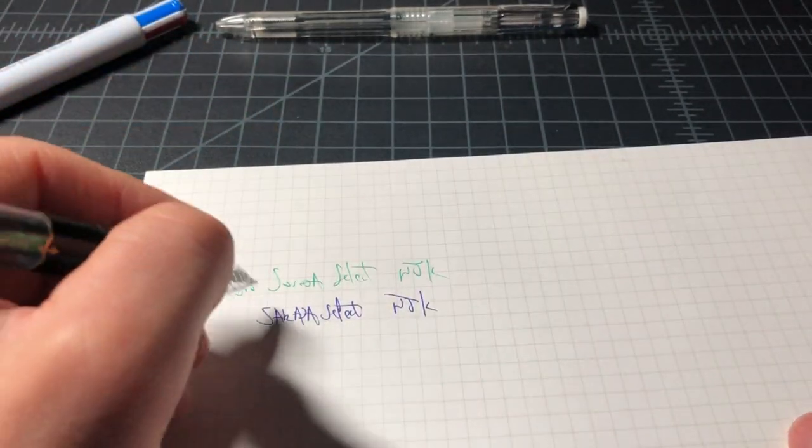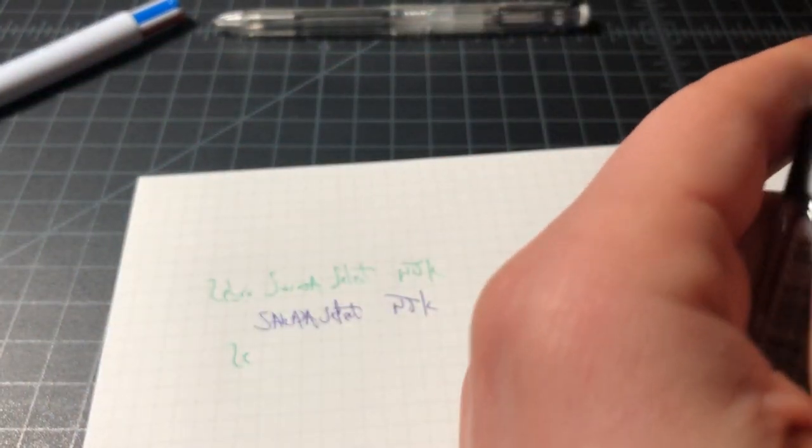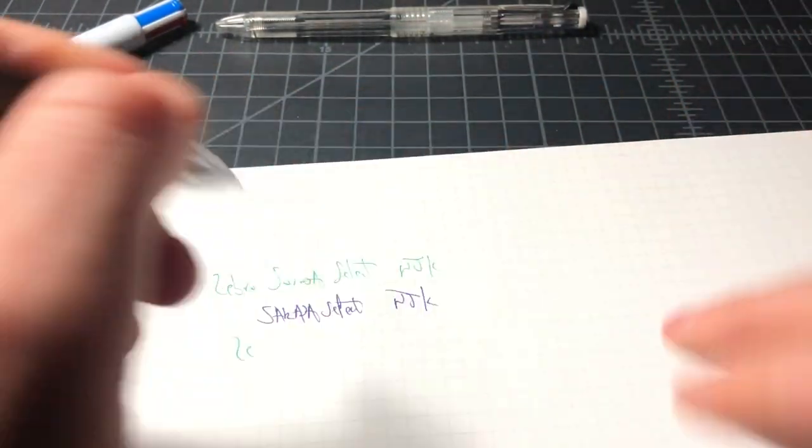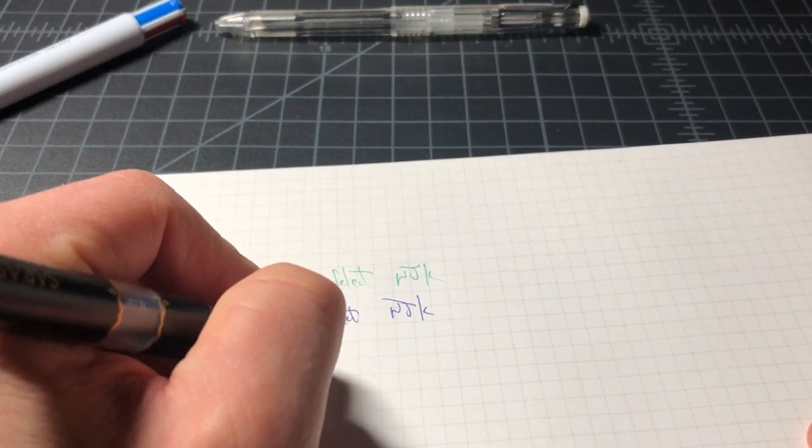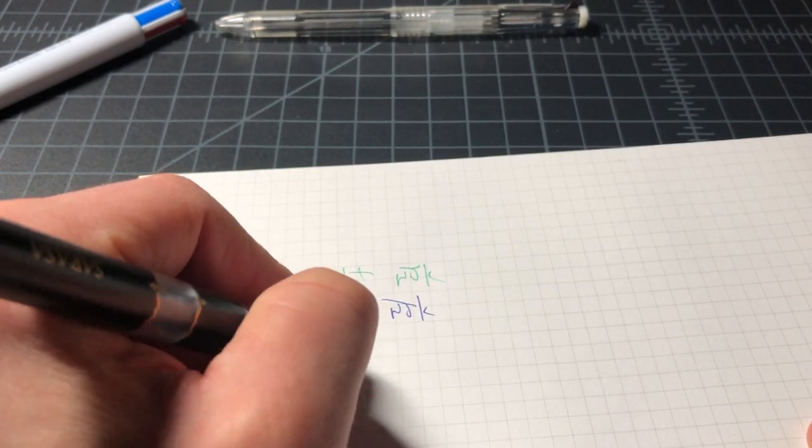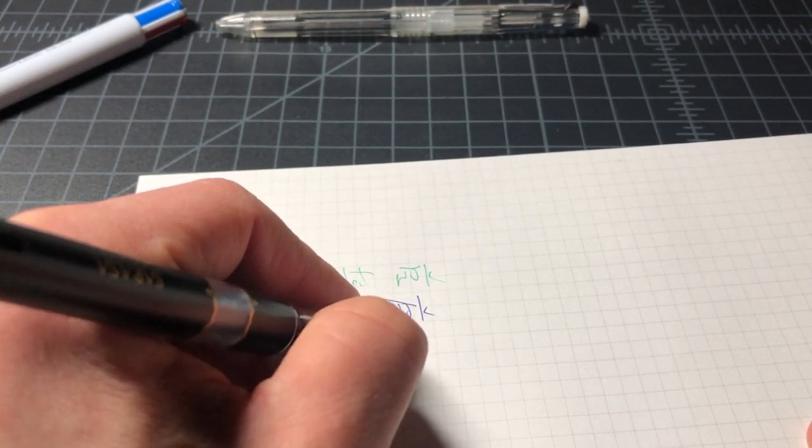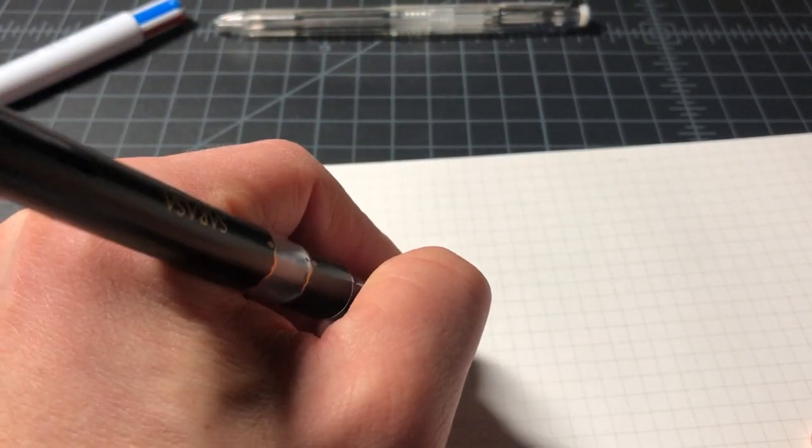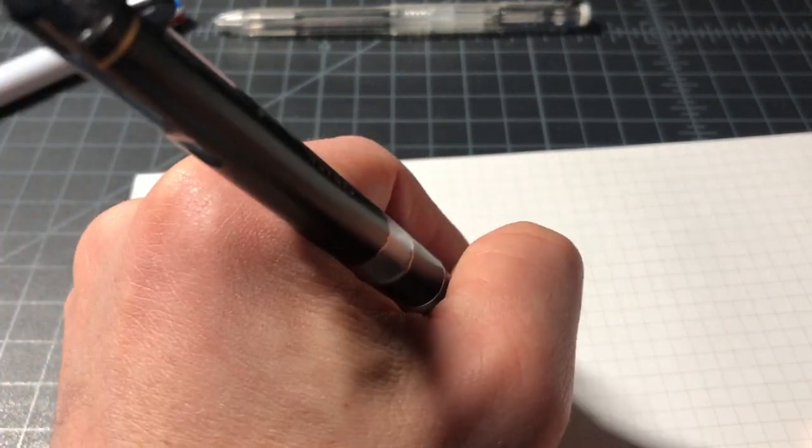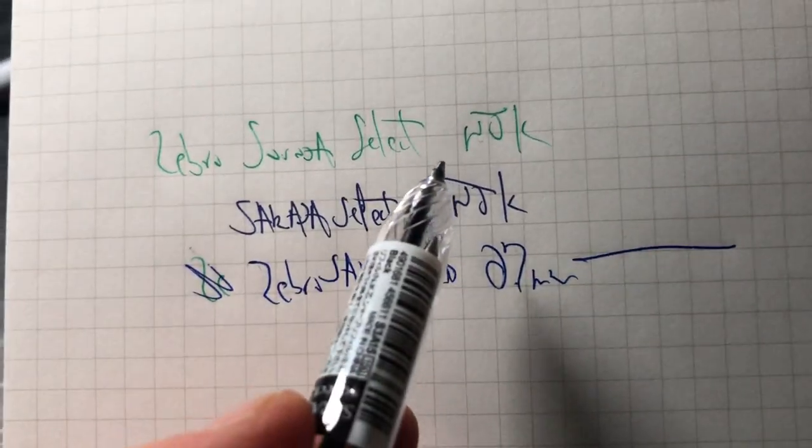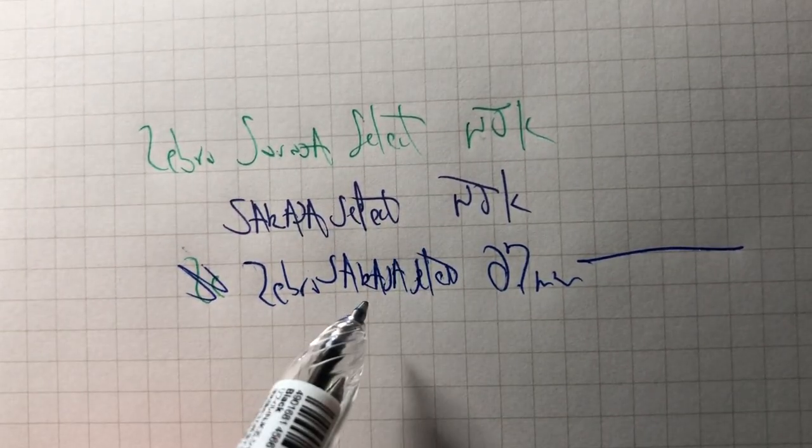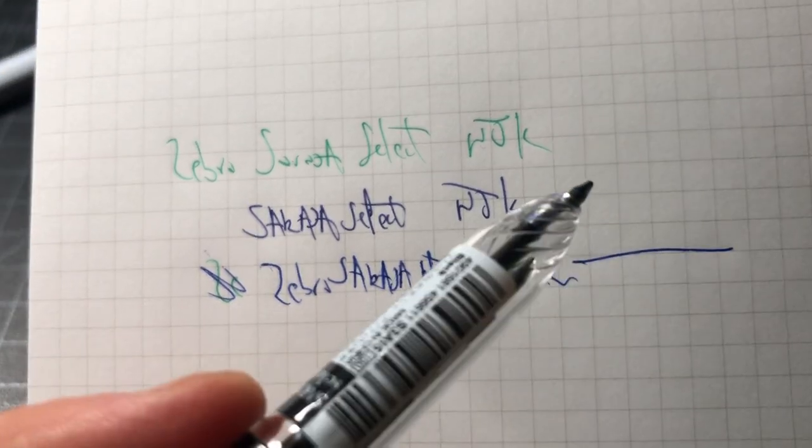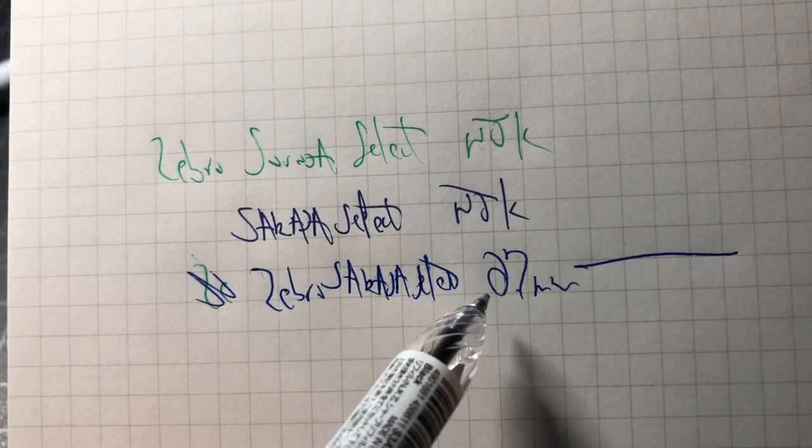And this is the other Zebra. All right, picked the wrong one, this is it. So here we have the NJKs in the 0.5 and then we have the Sarasa Select, the other ink I don't know what it's called, I'll put it in the notes, in the 0.7 millimeter.